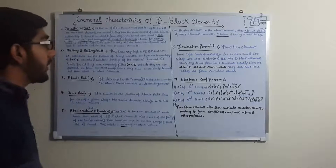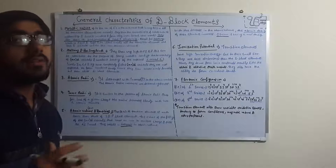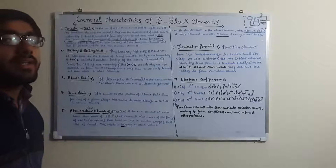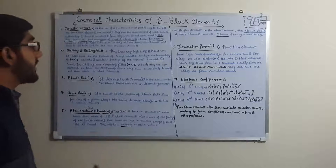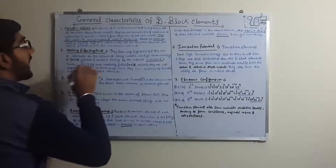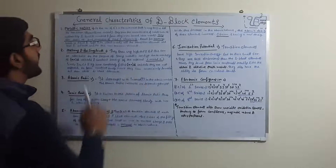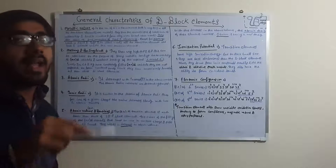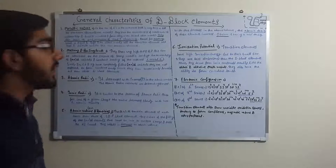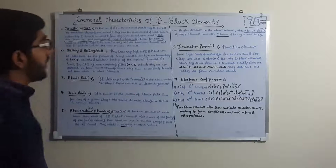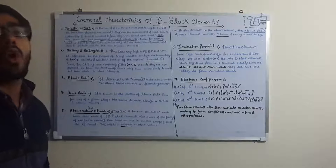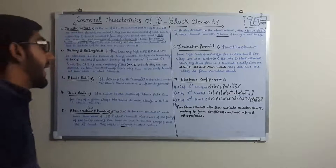There is also covalent bonding of the unpaired D orbitals — since transition elements have unpaired D orbitals, they form covalent bonds and overlapping of N minus 1 D orbitals occurs, making melting and boiling points high. The exception is zinc, cadmium, and mercury, which have completely filled N minus 1 D orbitals, so they cannot form covalent bonds and have comparatively lower melting points than other D block elements.